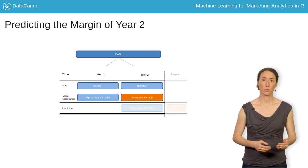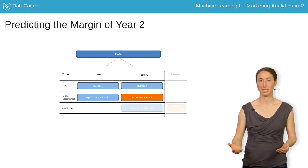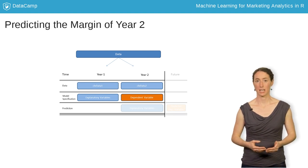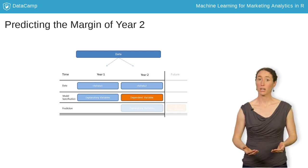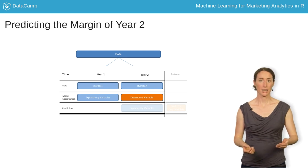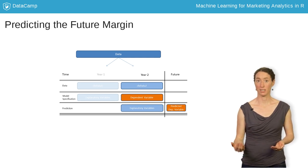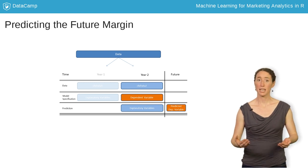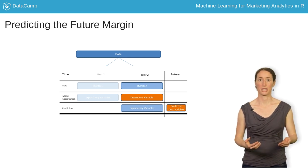First, we take the explanatory variables from year 1 and use them to predict the dependent variable in year 2. This is the model specification step done on the dataset called CLV data 1. When the model is specified, we move on to the next step. Then, we take the explanatory variables from year 2 and make predictions for the future margin at year 3, the period which we do not have any information about. Information about year 2 is stored in the dataset CLV data 2. Variables used for prediction need to have the same names in both datasets.